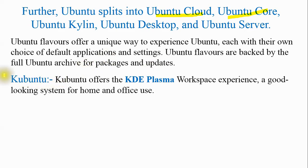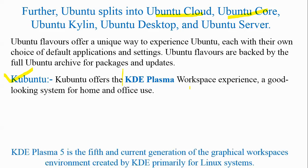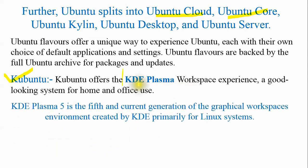The first flavor of Ubuntu is Kubuntu. Kubuntu offers the KDE Plasma workspace experience — a good-looking system for home and office use. KDE Plasma 5 is the fifth and current generation of the graphical workspace environment created by KDE, primarily for Linux systems.